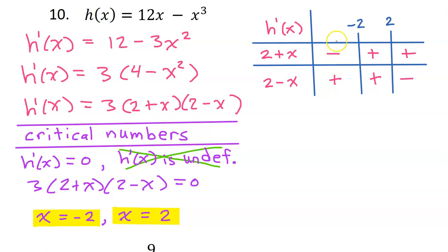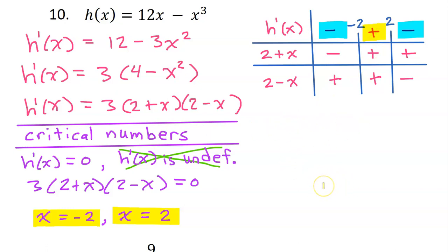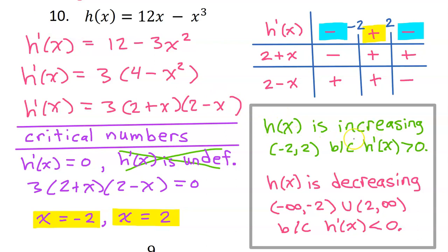Now let's judge the sign of the overall derivative. In the first column, we would have a negative times a positive — that's a negative. In the second column, this would be a positive times a positive, which would be a positive. And the third column, positive times a negative, is a negative. Remember, our overall goal was to find where function h is increasing or decreasing. h will be decreasing wherever h prime is negative, and h will be increasing where h prime is positive. So we say h of x is increasing from negative 2 to 2 because h prime is positive, and h is decreasing from negative infinity to negative 2 and from 2 to infinity because h prime is negative.